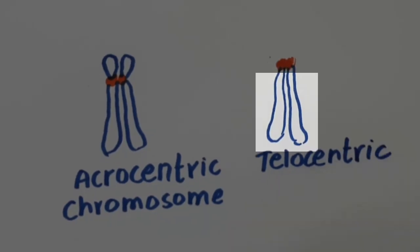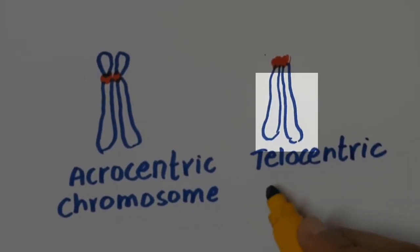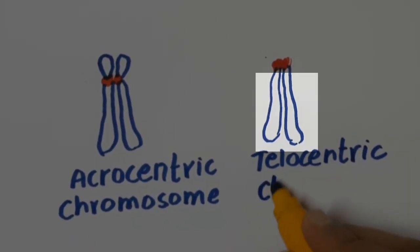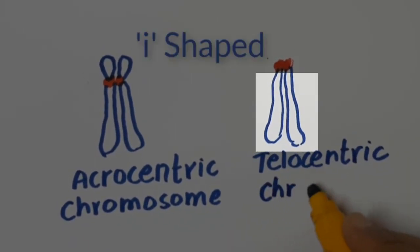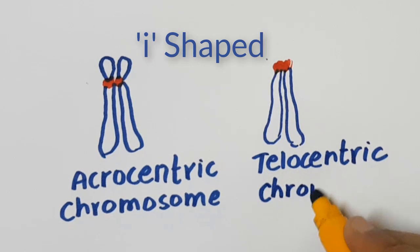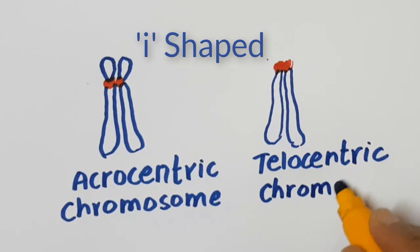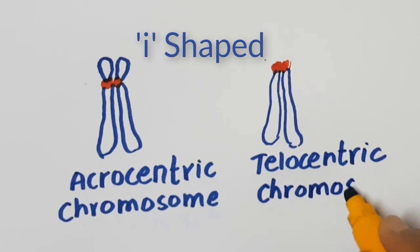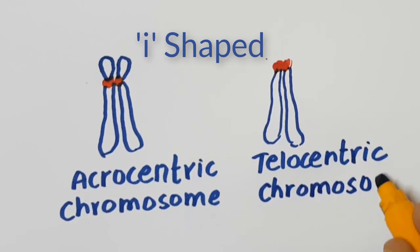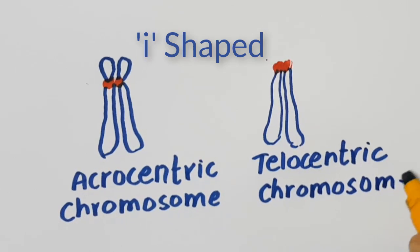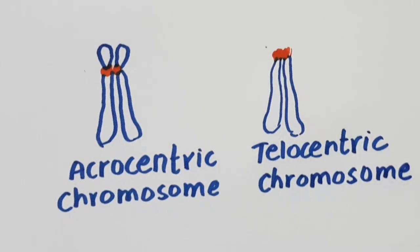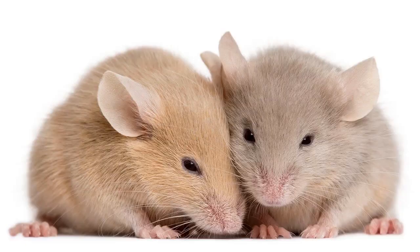Telocentric chromosomes appear I-shaped. Humans don't have these type of chromosomes, but they are found in some species like mice.